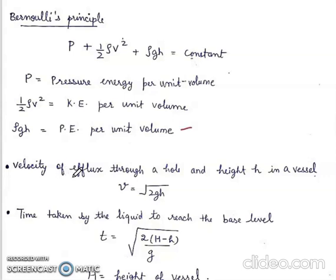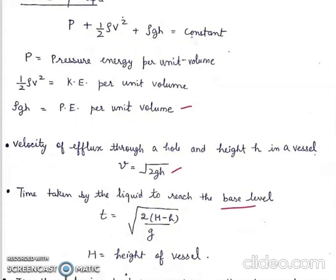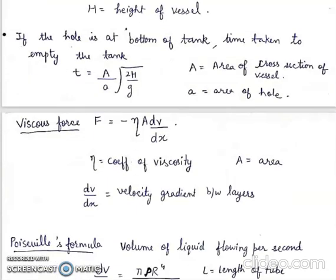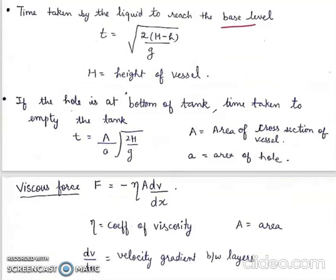Velocity of efflux through a hole at height h in a vessel. V is equal to square root 2gh. Time taken by the liquid to reach the base level. T is equal to square root 2 into H minus h upon g. Capital H is the height of the vessel.